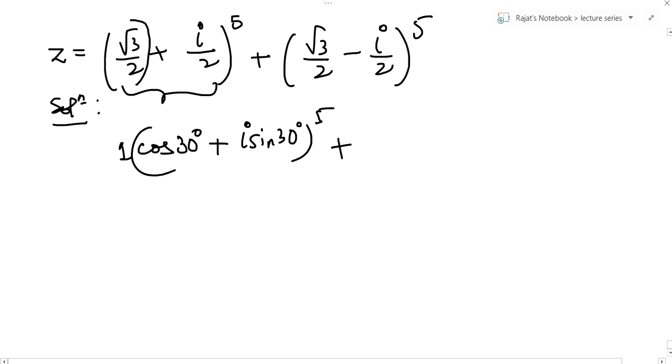What about this one? Now I want to find the angle for which the cos is positive and the sin is negative. This angle lies in the fourth quadrant. This will be cos of 330 degree plus i sin 330 degree whole to the power 5. Again, the magnitude of this complex number is 1.